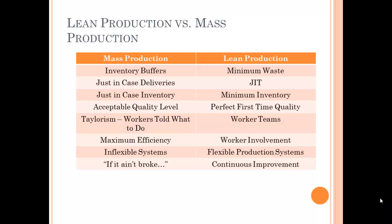In LEAN, you keep a minimum of inventory on hand, whereas mass production has just-in-case inventory in case of problems. Mass production focuses on some acceptable quality level; LEAN focuses on perfect first-time quality. In mass production, there's Taylorism — workers are told what to do. In LEAN, you have worker-led teams. Mass production is about maximum efficiency, while LEAN focuses on getting the worker involved. Mass production systems are inflexible; in LEAN, they are flexible — they can be changed out, modified, and adjusted.